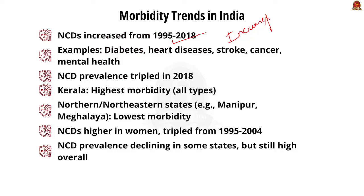Diseases like diabetes, heart disease, stroke, and cancer are examples of non-communicable diseases. Looking at trends across states, Kerala has the highest morbidity rate and also the highest rate of both communicable and non-communicable diseases. Andhra Pradesh, West Bengal, Punjab, and Karnataka also have high morbidity rates.